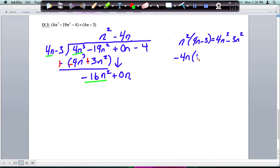Negative 4n times 4n minus 3, and I get negative 16n squared plus 12n, a positive 12n. So let's go ahead and write that here.